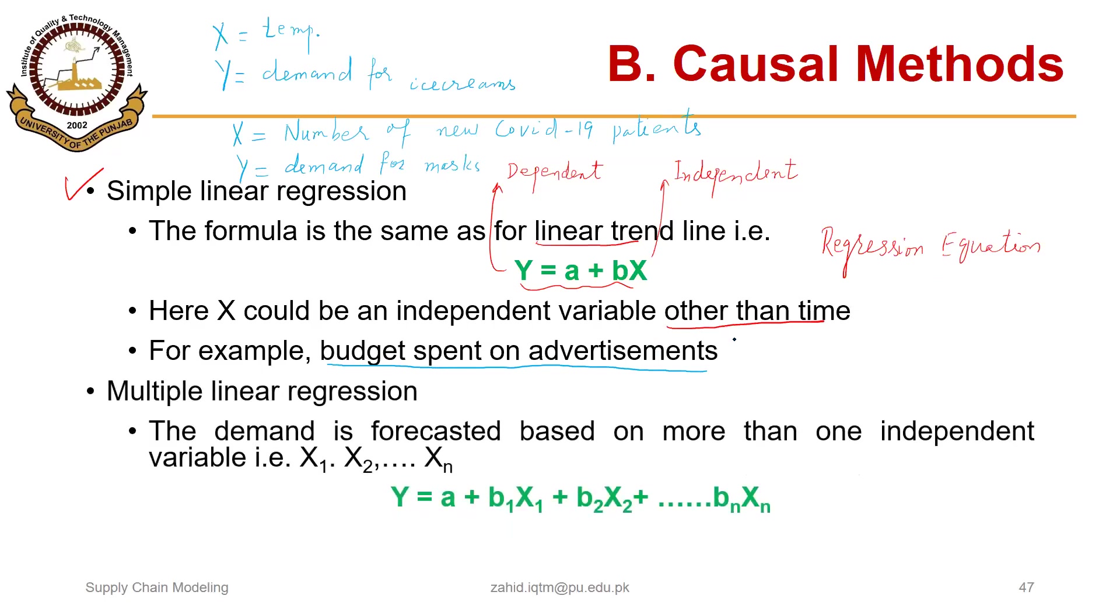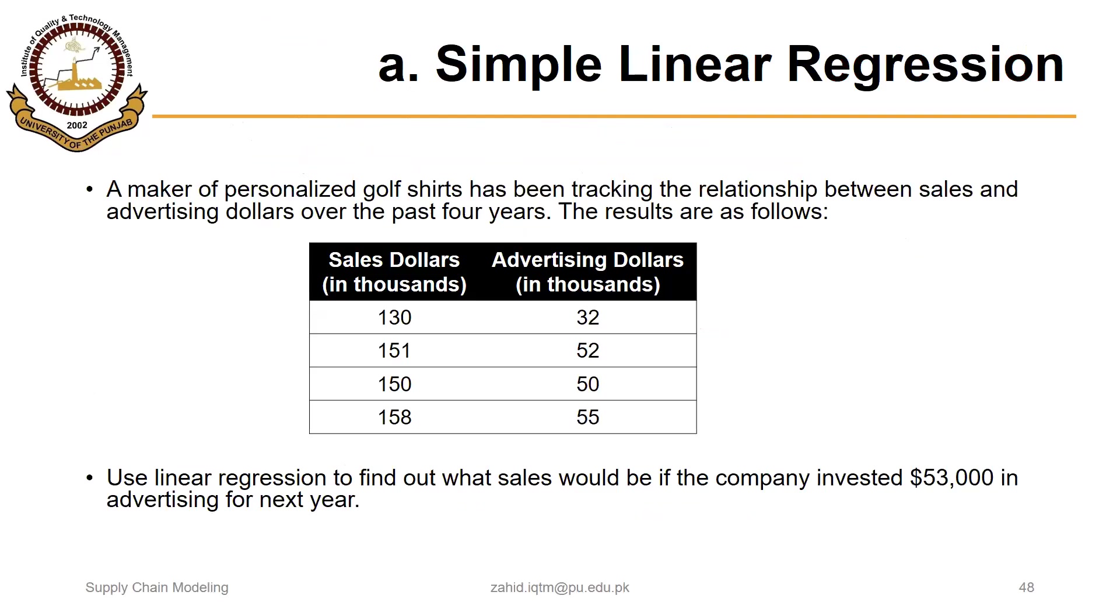But if we are having more than one independent variable, then that is called multiple linear regression. Demand is forecasted based on more than one independent variable. In this segment, we will focus on simple linear regression.